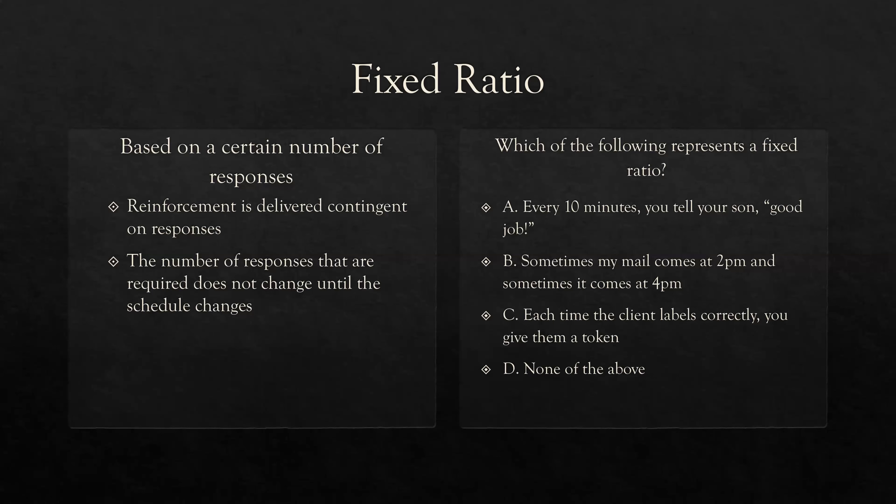B: sometimes my mail comes at 2 p.m., sometimes at 4 p.m. If my mail sometimes comes at 2 and sometimes at 4, is it based on responses or time? Time — because if I check my mailbox a hundred times before 2 p.m., I'm still not getting mail. It has nothing to do with my responses. So B, again based on time, you eliminate it. C: each time the client labels correctly, you give them a token. This is an FR1 — that response requirement is steady, never changes, and it's based on responses. So C is the best representation of a fixed ratio.